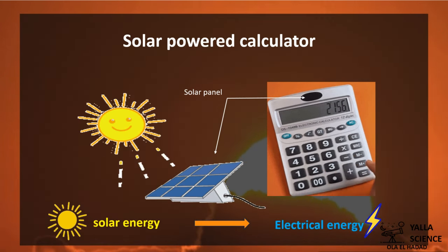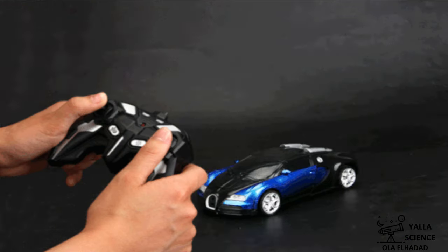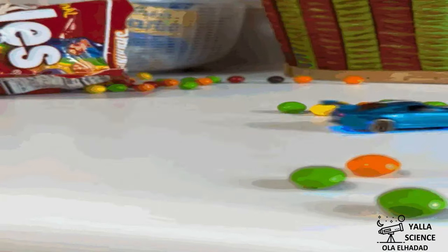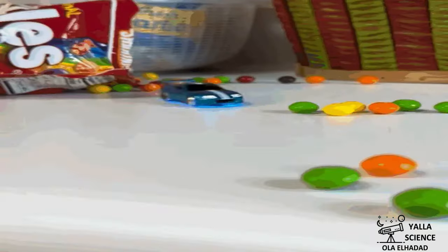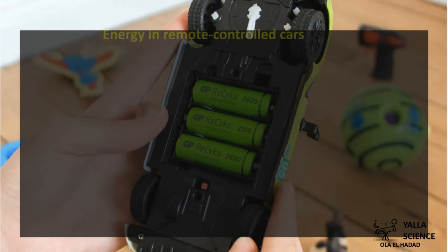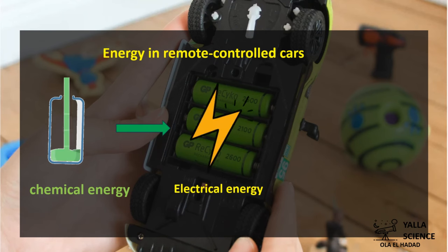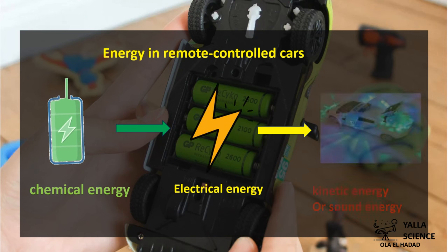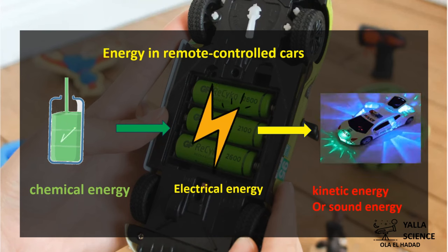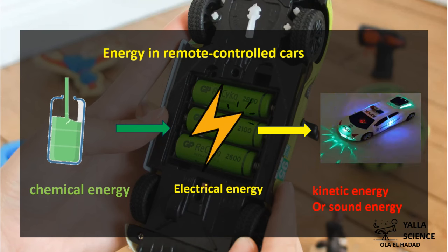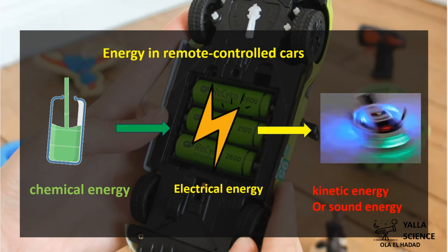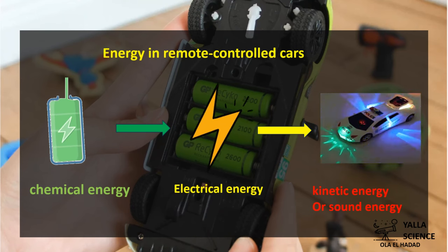Other devices use remote control, like remote-controlled toys. They need energy to move and perform activities like spinning, moving forward and backward. The batteries inside a remote-controlled car are the resource of energy. The batteries store chemical energy, which is converted into electrical energy, and this electrical energy is converted into sound and kinetic energy.